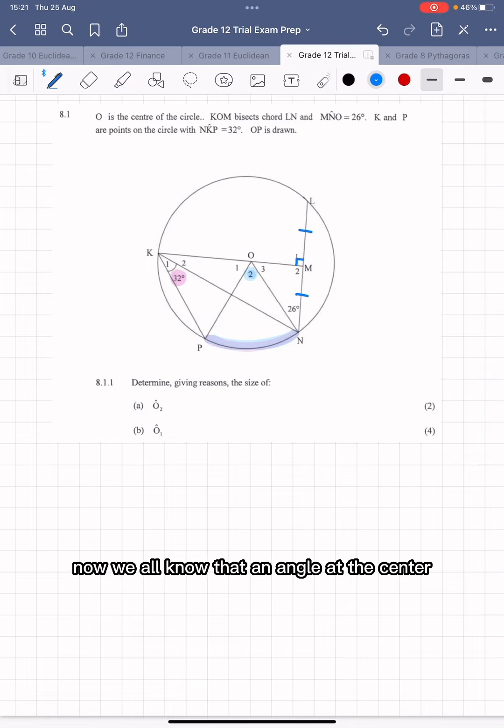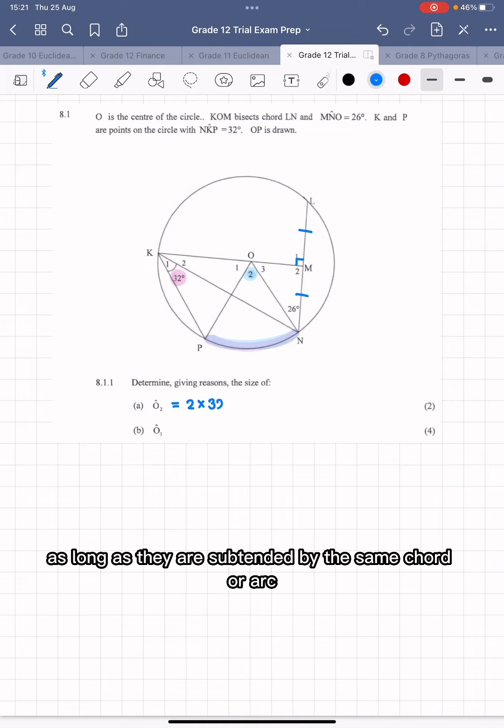Now we all know that an angle at the center, O2, is equal to double, two times the angle at the circumference, as long as they are subtended by the same chord, or arc in this case.